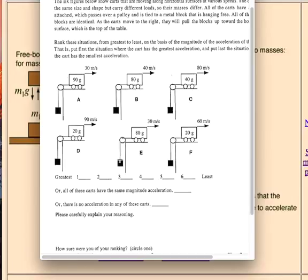Or you could think of it as the one with the smallest mass. So 20 grams is the lightest, we'll have the highest acceleration, D and F, and then the next one would be 40, and then 80 and 90. What about tension?